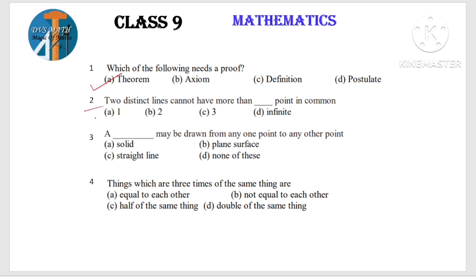Second question: Two distinct lines cannot have more than blank point in common. Two distinct lines — different lines. Two distinct lines cannot have more than one point in common. The answer is one. You can use the textbook sentence. You will score two out of two easily.